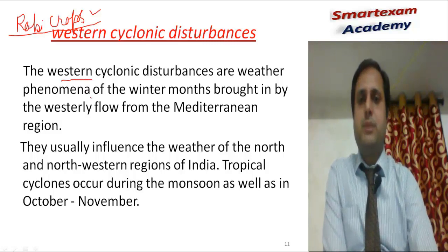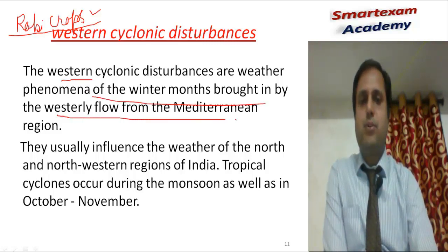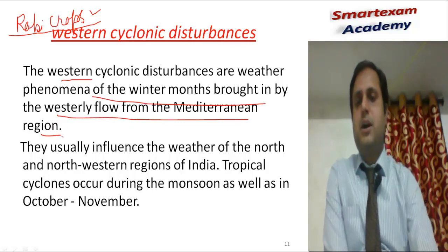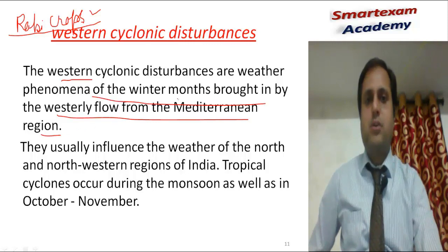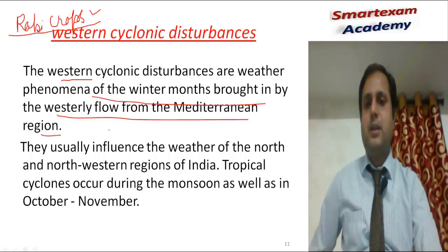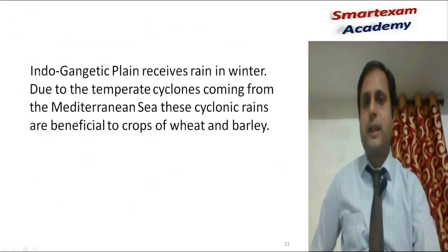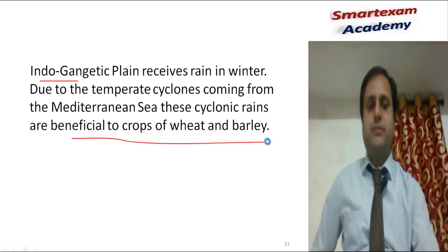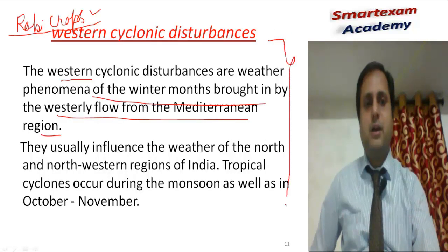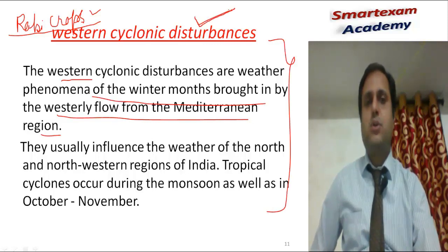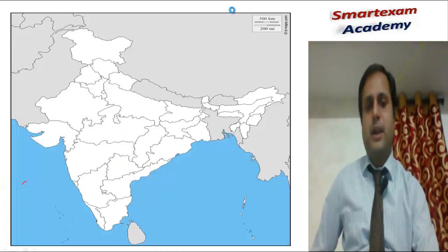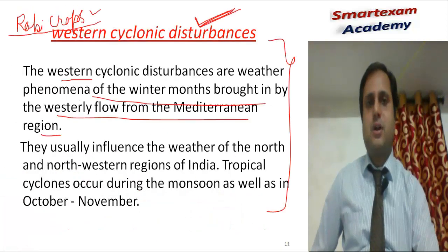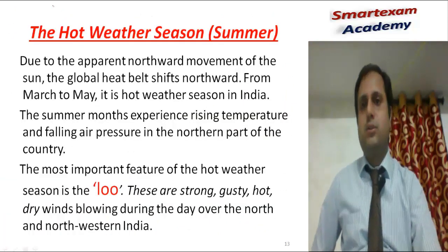The western cyclonic disturbance is a weather phenomenon of the winter months brought by westerly flow from the Mediterranean region. It is a low pressure created near the Mediterranean Sea that enters India through Iran, Iraq, Afghanistan, and Pakistan, mainly causing rainfall in the Indo-Gangetic plain and benefiting wheat and barley crops. This question comes frequently in exams, so you should be prepared.